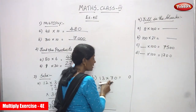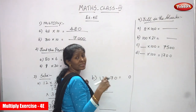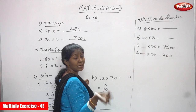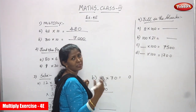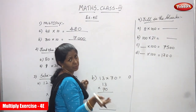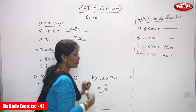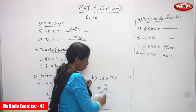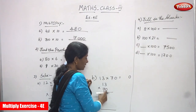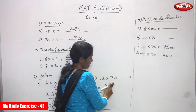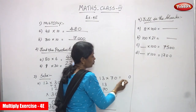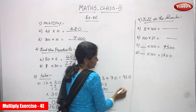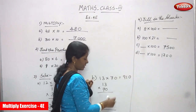10 means one zero, so you must write that zero at the end after the number. You can follow whichever method is convenient. So 13 into 7 — I know the table very well — gives 91. That means the answer is 910.